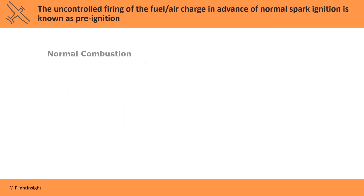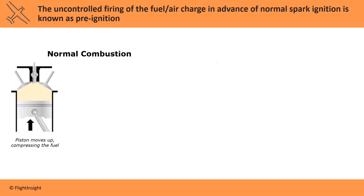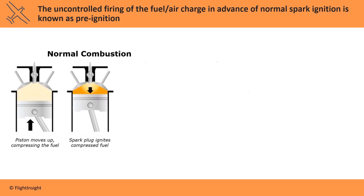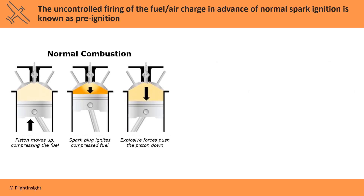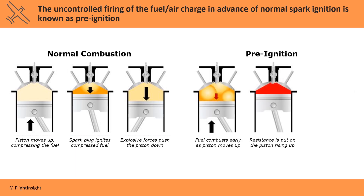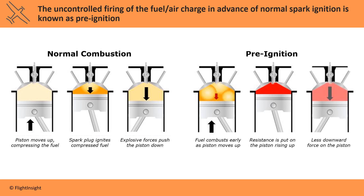In normal combustion, the piston moves up, compressing the fuel, the spark plugs ignite the compressed fuel, and explosive forces push the piston down. If the temperatures inside the cylinder climb too high, it can cause the fuel-air mixture to ignite too early, putting resistance on the still-rising piston and providing less downward power-producing force. This uncontrolled firing of the fuel-air mixture in advance of normal spark plug ignition is known as pre-ignition, and can be caused by running a mixture that causes the exhaust gases to be excessively hot.